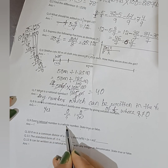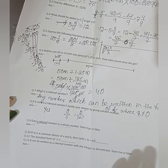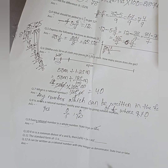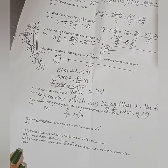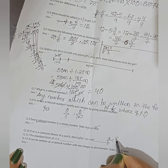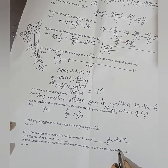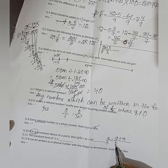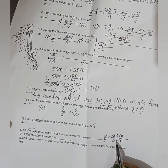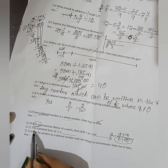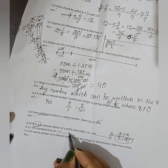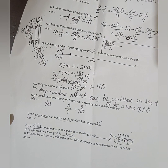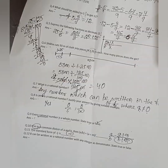True or False: every rational number is a whole number? False — but all whole numbers are rational numbers. If m is a common divisor of a and b, then a/b = (a/m) ÷ (b/m), so the answer is b/m. The standard form of −1 is −1 itself. Don't think it's asking for additive inverse — don't write +1.